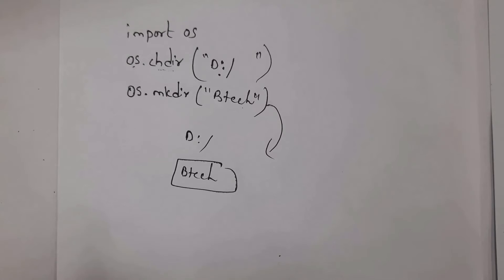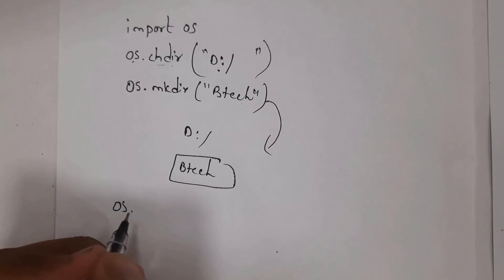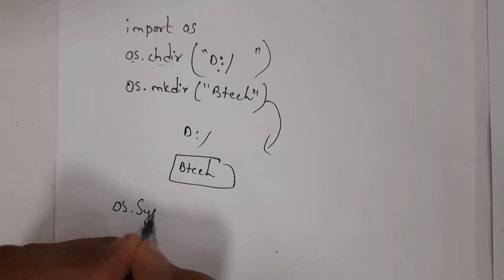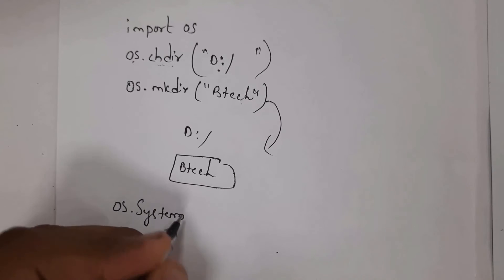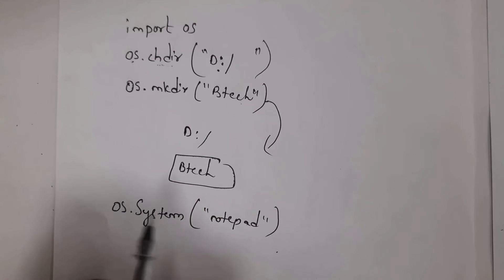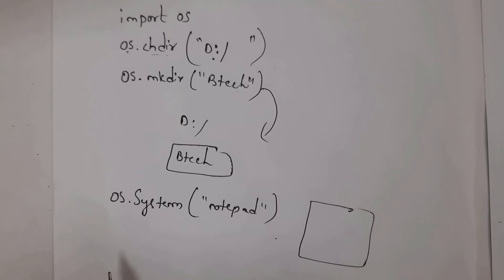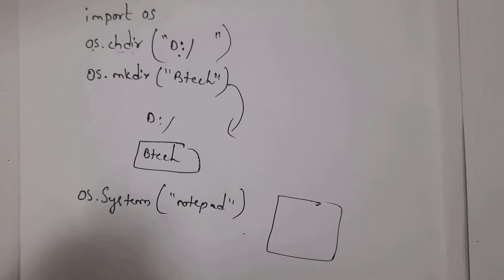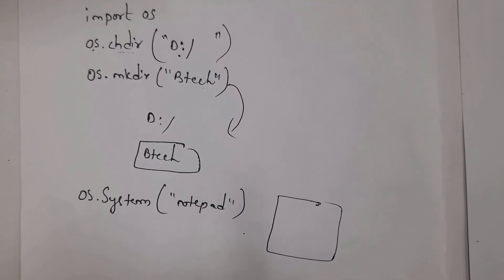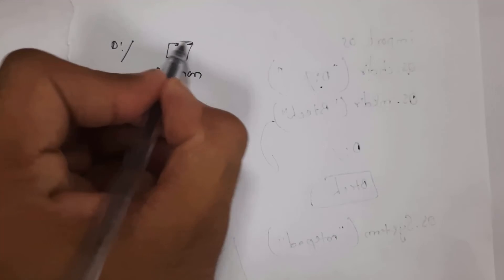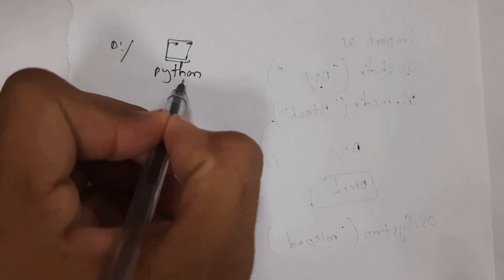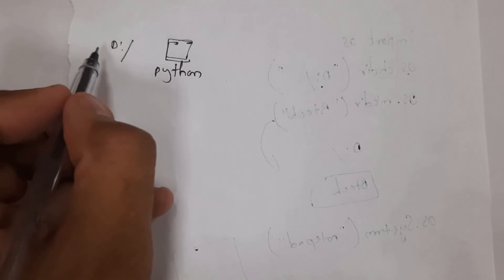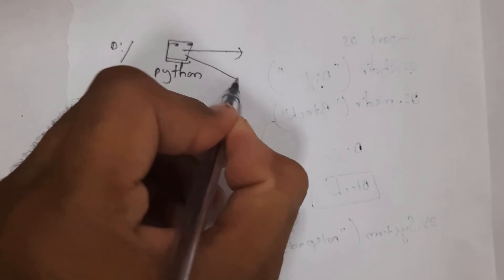You can also use the os.system() function to open applications. For example, write 'os.system("notepad")' — whenever you run this line of code, it will automatically open Notepad. Similarly, write 'os.system("chrome")' and it will automatically open Chrome.